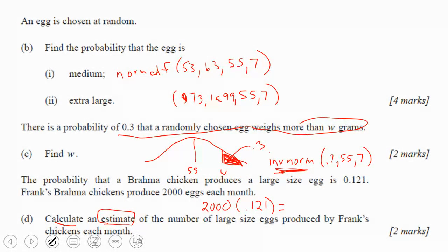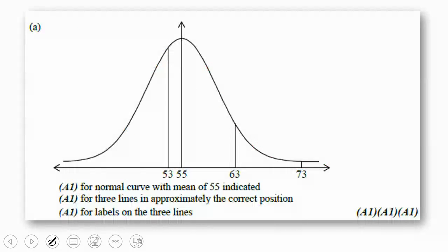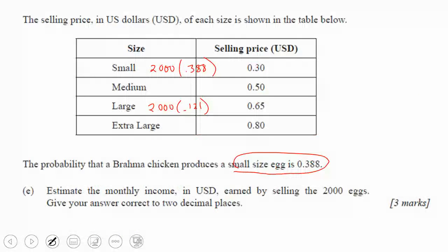If you go back, they tell you the large eggs is 0.121. If you look back again, the medium eggs were 53 to 63, and that was the probability we already found. So the medium eggs, if you do normal CDF from 53 to 63, mean 55, standard deviation 7, that probability was 0.486.